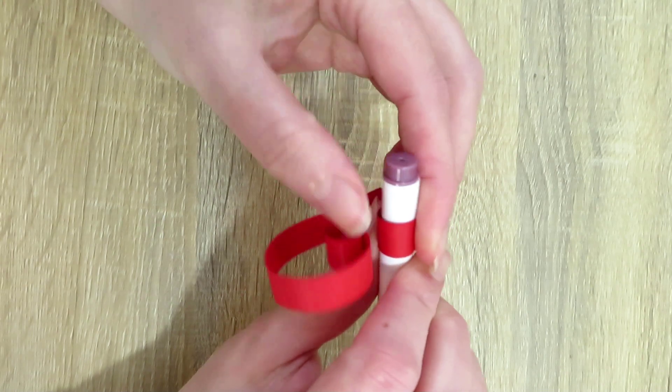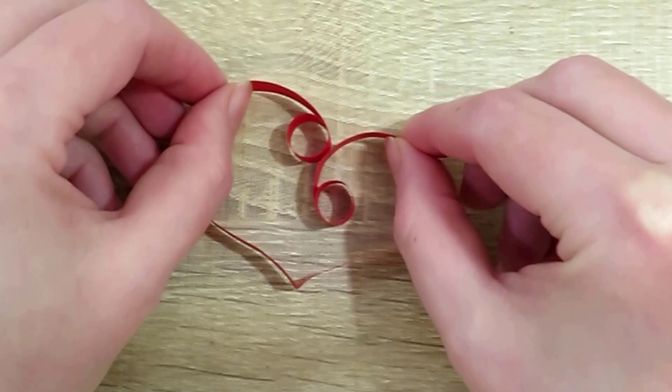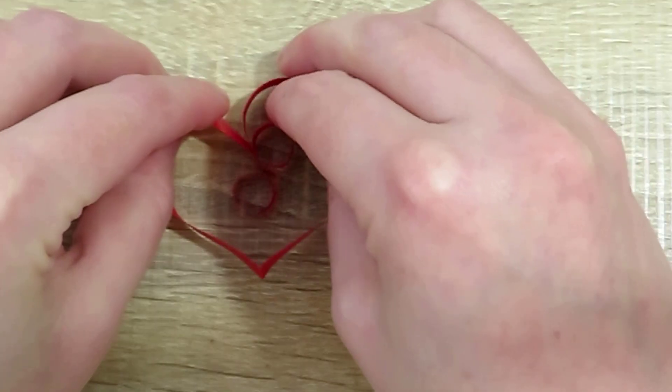Repeat on the other side. Decide what shape you would like, you can make the heart symmetric or asymmetric. Apply glue as needed and let the glue set.